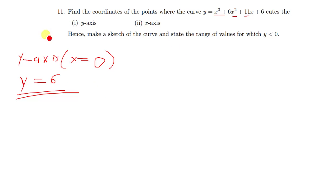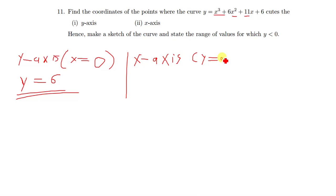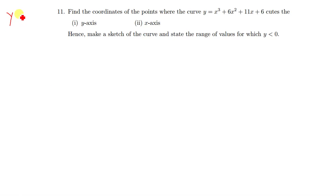And then it's going to cut the x-axis when y is equal to 0. In the x-axis, the value of y is equal to 0. So, meaning where there is y, I just put a 0. When you put a 0 there, it means that you are going to factorize this to find the zeros. So, the y-intercept is just y equals 6. And then to find the x-intercepts, let's put a 0 there. Let's use the trial-and-error method to find the factors.